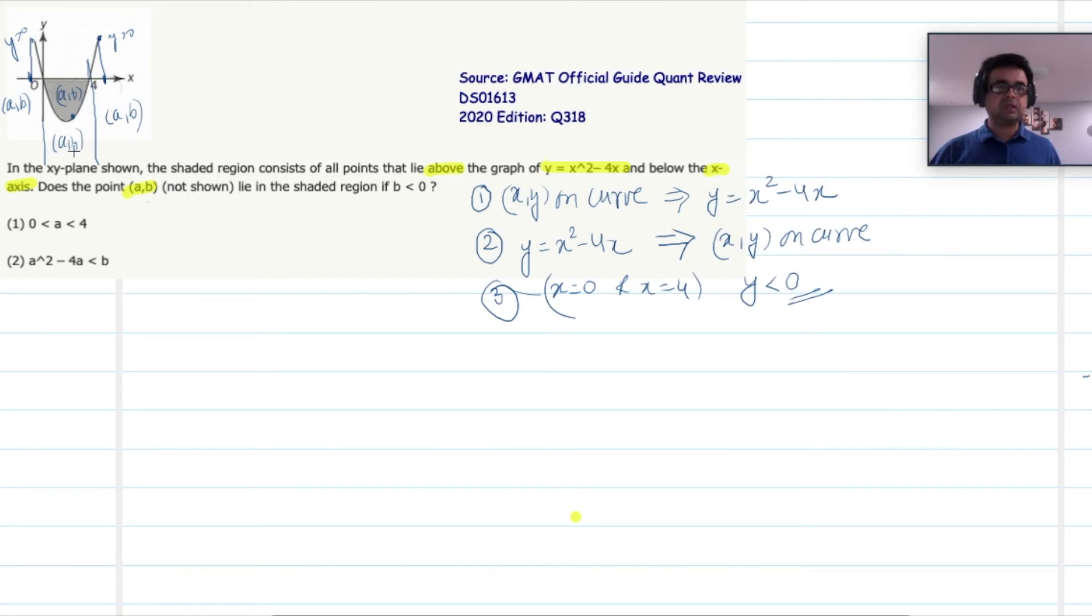So b may be satisfying a squared minus 4a, or it could be outside of the curve. Since I am not given, sometimes I am getting yes to the asked question. The other time I am getting no to the asked question. So statement one is insufficient.